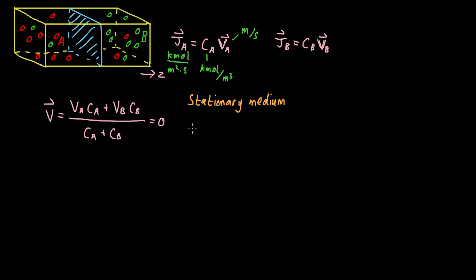then what we're left with is V_A C_A plus V_B C_B is equal to zero. And we know that V_A C_A is simply the molar flux of species A, and V_B C_B is the molar flux of species B. This is equal to zero. So this brings us to the point of this little exercise.